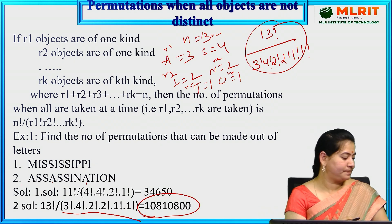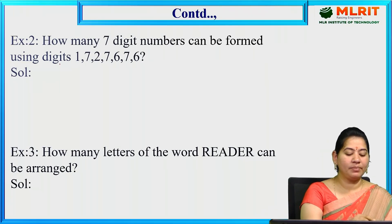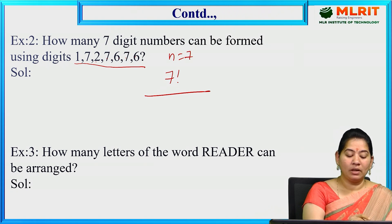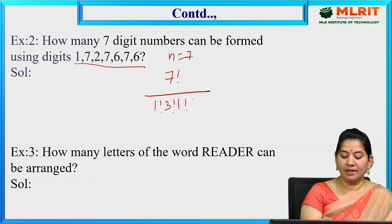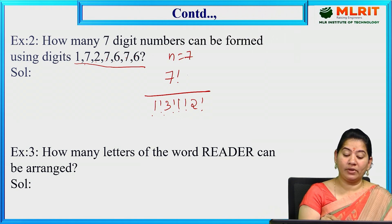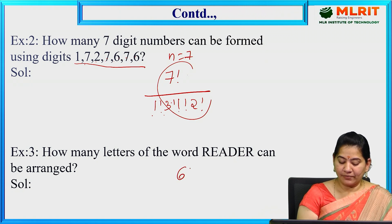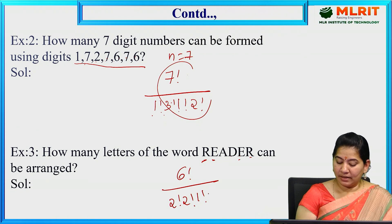Next: how many 7-digit numbers can be formed using 1, 7, 2, 7, 6, 7, 6? Total n = 7. 1 is repeated 1 time, 7 is repeated 3 times, 2 is repeated 1 time, 6 is repeated 2 times. Verify: 1+3+1+2 = 7. Answer: 7! / (1! × 3! × 1! × 2!). For the word READER (n=6): R appears 2 times, E appears 2 times, A appears 1 time, D appears 1 time. Answer: 6! / (2! × 2! × 1! × 1!) = 180.